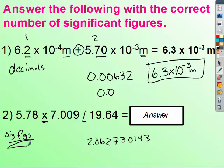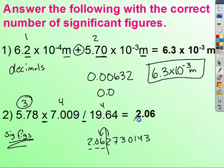But we need to look at the number of significant figures. 5.78 has 3. 7.009 has 4. And 19.64 has 4. The lowest number is 3. And so I'm going to look at my number and round it to 3 significant figures. The 6, double check to see if it rounds up. It does not. And so the answer is just 2.06.